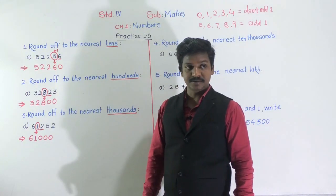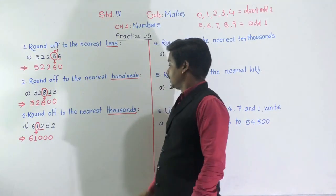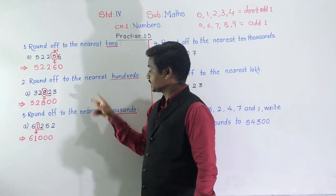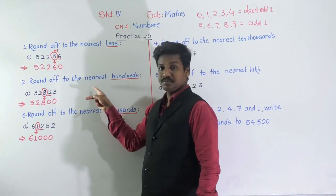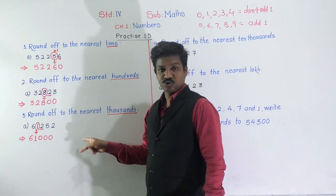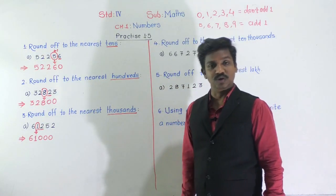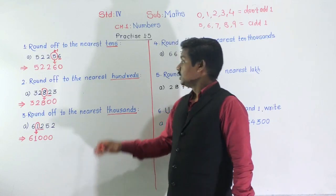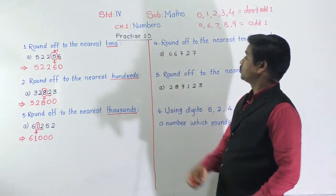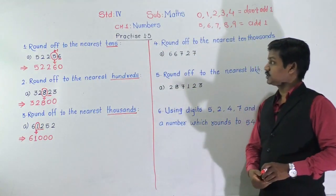So 61,252 after rounding off to the nearest thousand gives us 61,000. In both these questions, example B — you have to do as homework. Let's move to the next question.